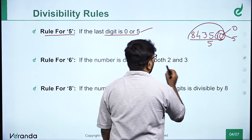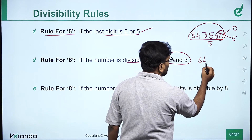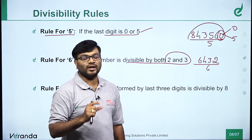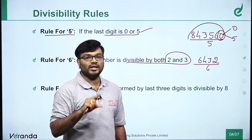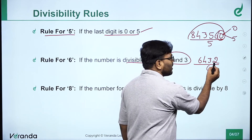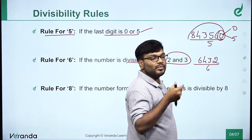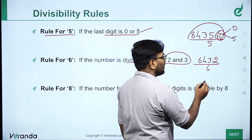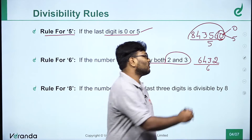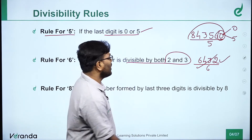Rules for 6. Divisibility by 6: if the number is divisible by both 2 and 3, then it is divisible by 6. For example, take the number 6, 4, 3, 2. Check the unit place — if it is even, it is divisible by 2. Then add the digits: 6 plus 4 is 10, 10 plus 3 is 13, 13 plus 2 is 15. Since 15 is divisible by 3, and the number is also divisible by 2, that number is divisible by 6.